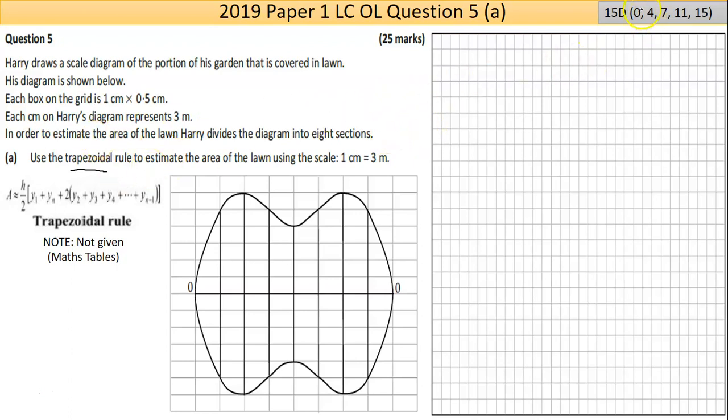Okay, so if you're back, this part is worth 15 marks and question 5 is saying that Harry draws a scale diagram of the portion of his garden that's covered in lawn. I screen grabbed it from the exam paper, so it's a little bit different than how it looks in the actual exam paper. It's saying that each box in the grid is one centimeter by 0.5, so two of those boxes together basically give a centimeter.